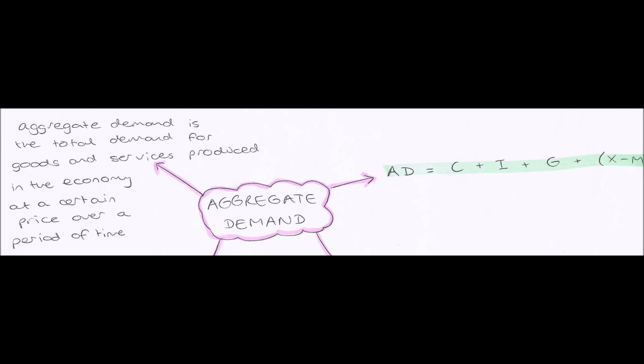And that's what aggregate means. Aggregate means total. So the total demand of all goods and services in the whole economy, whole economy, big picture, macroeconomics, at a given price level.